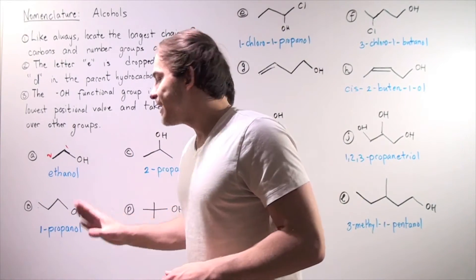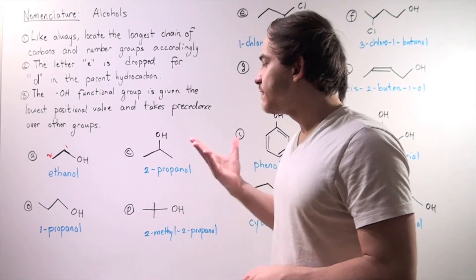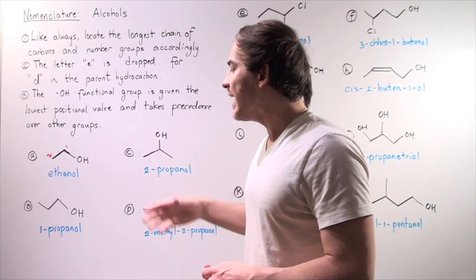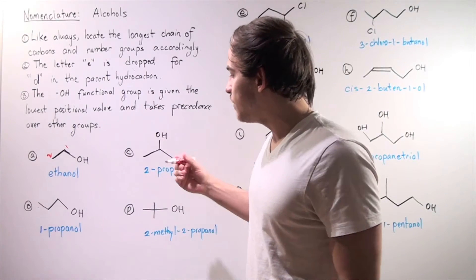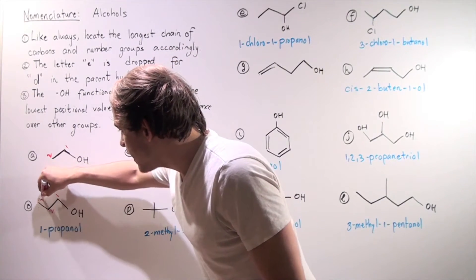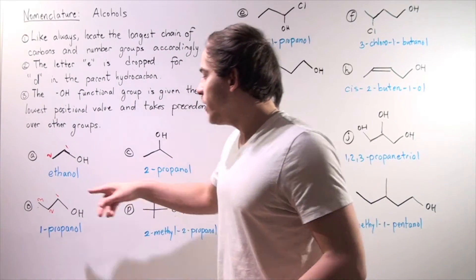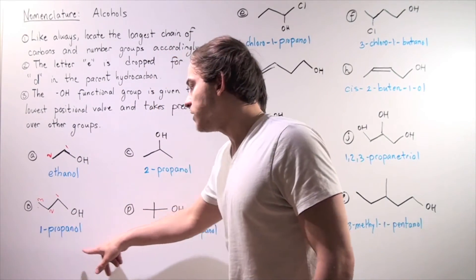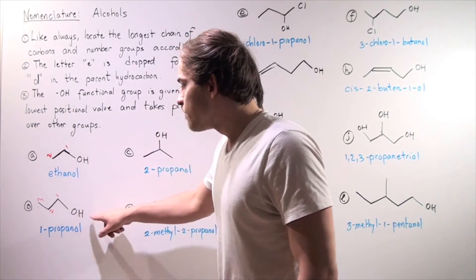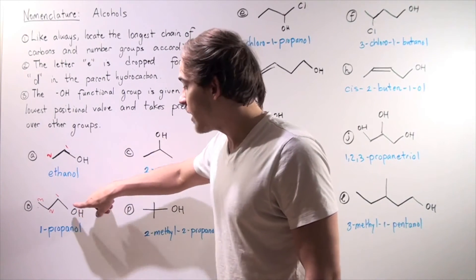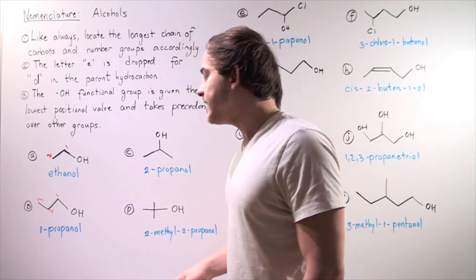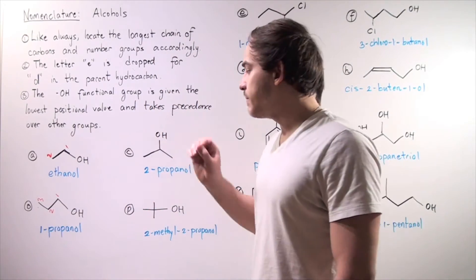Example B: once again, the same exact story. We're trying to find the lowest possible positional value for the hydroxy group and the longest possible chain. We name it 1-propanol. The one simply designates the value of our hydroxy. Our hydroxy is on the first carbon, and propanol means we have a three-carbon backbone.